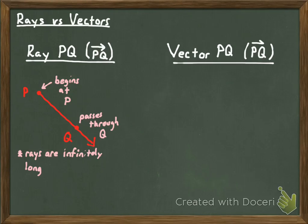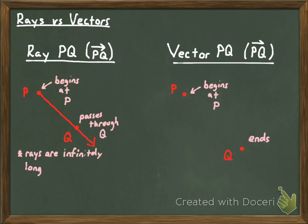Now let's contrast that with how you would draw vector PQ. I'm going to have a point P and a point Q again. When drawing vector PQ, just as with ray PQ, that vector is going to begin at point P. But it's going to end at Q — so let's say that this is the vector PQ right there. Because it actually ends at point Q, a vector is not infinitely long. It is finite, and so it has a definite distance or magnitude.